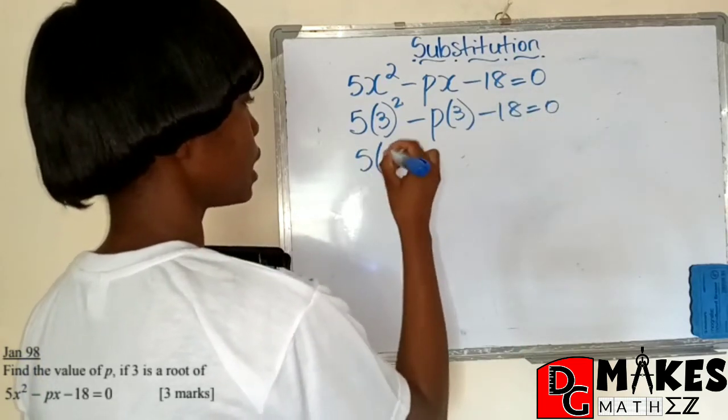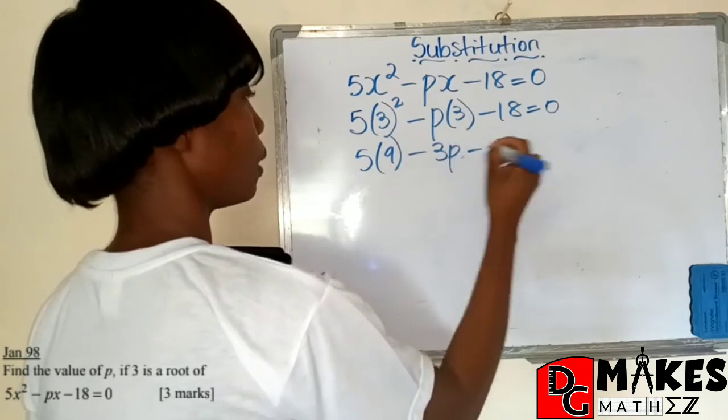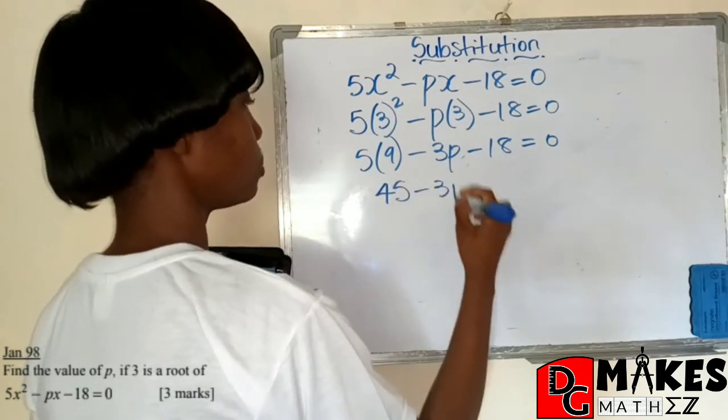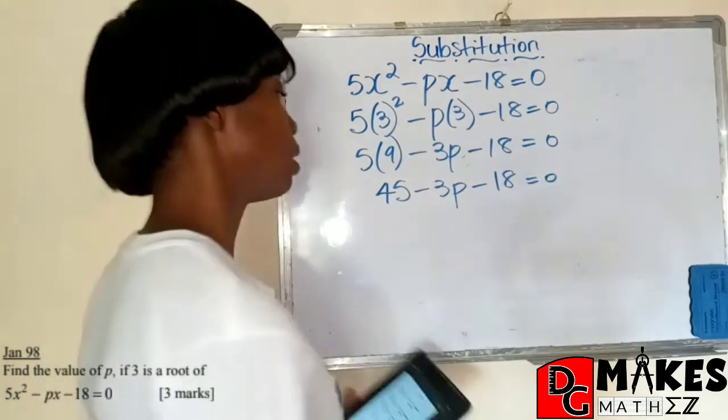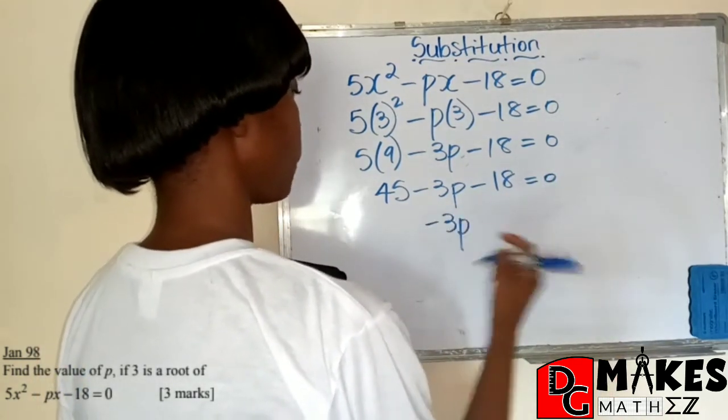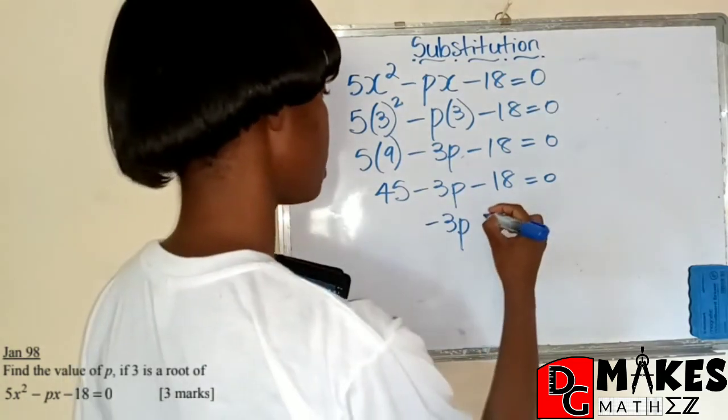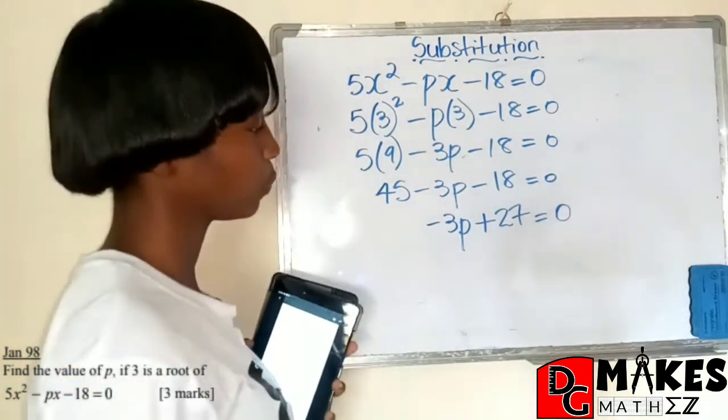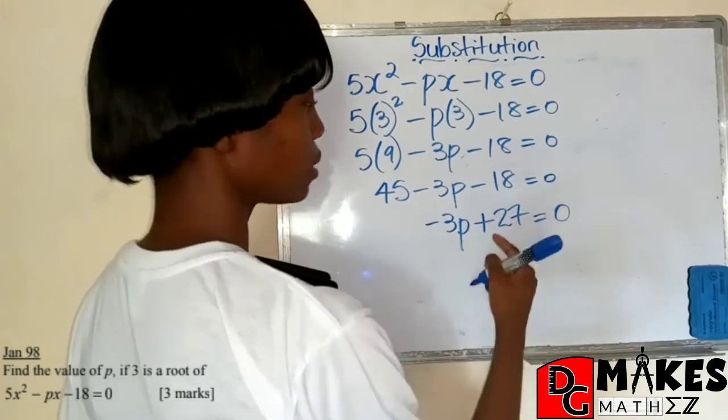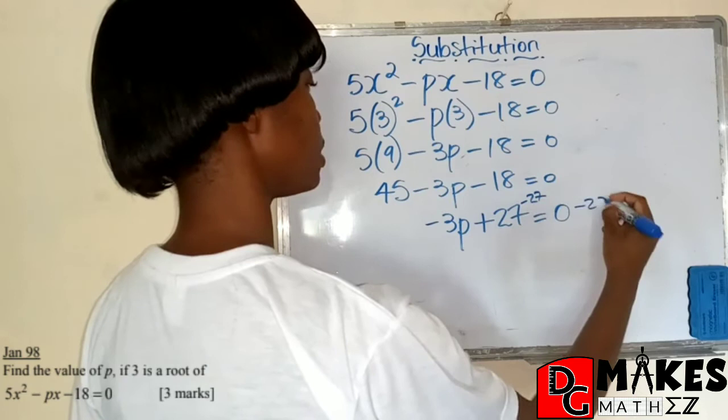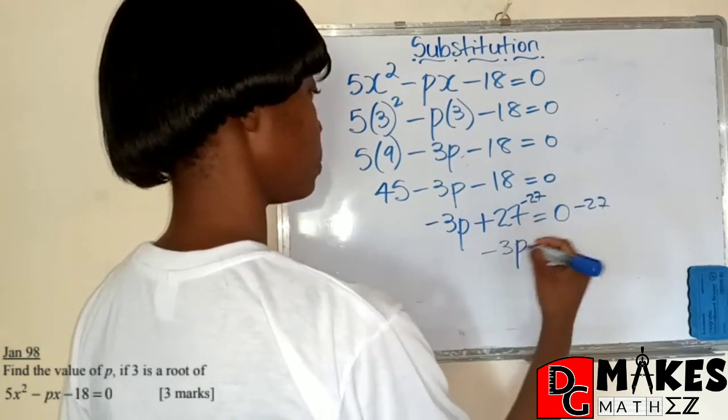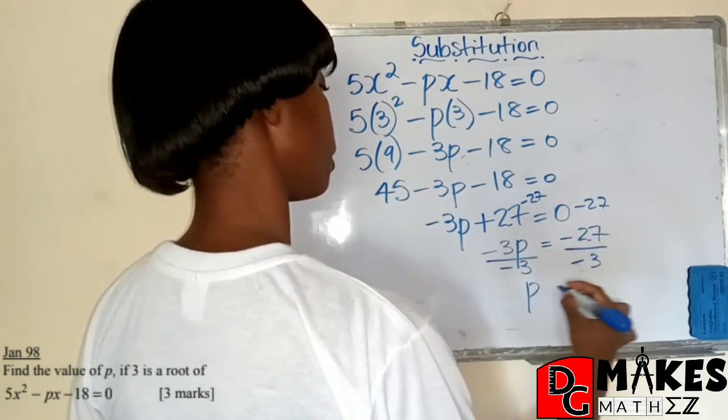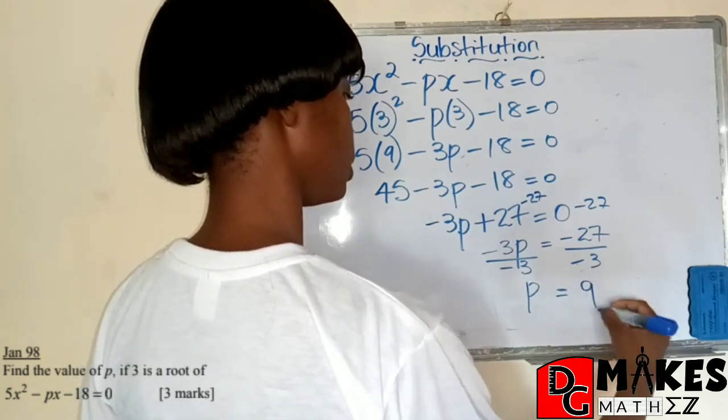And now we have 5 times 9 minus 3p minus 18 equals 0. 5 times 9 would give us 45 minus 3p minus 18 equals 0. Simplifying this, we get negative 3p. 45 minus 18 will give us 27. So that's positive 27 equals 0. We're solving for p and so we are going to get rid of 27, minus 27, minus 27. That gives us negative 3p is equal to negative 27. We're dividing both sides by negative 3 and so our value of p would be 9.